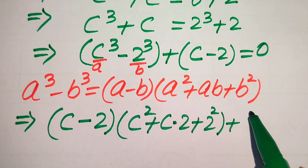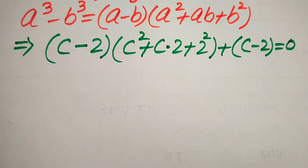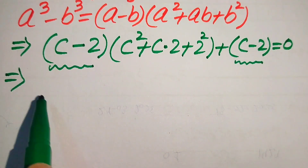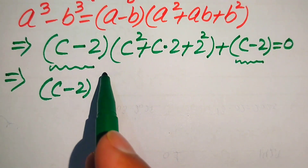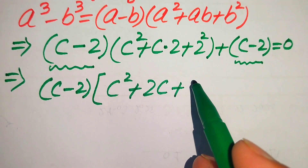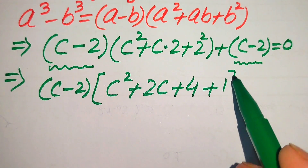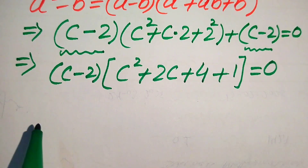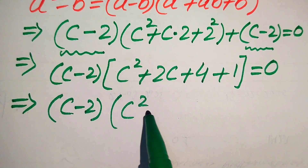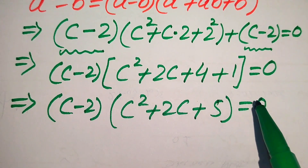According to these bases, we write the cubic factor as (c minus 2)(c squared plus 2c plus 4), and then plus (c minus 2) equals 0. Both terms involve (c minus 2), so we take (c minus 2) as a common factor to get (c minus 2)(c squared plus 2c plus 4 plus 1) equals 0, which simplifies to (c minus 2)(c squared plus 2c plus 5) equals 0.